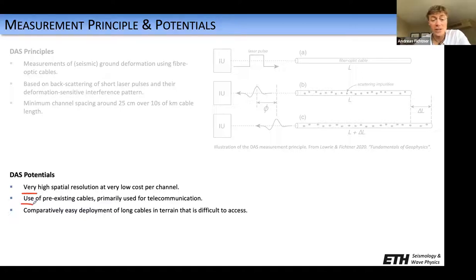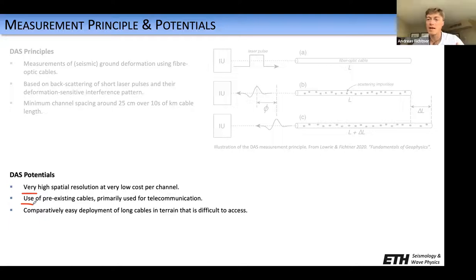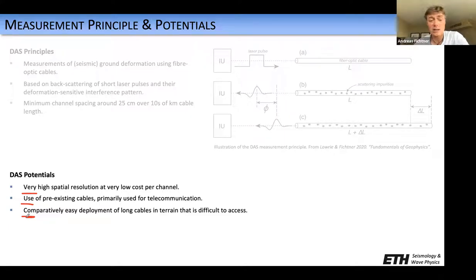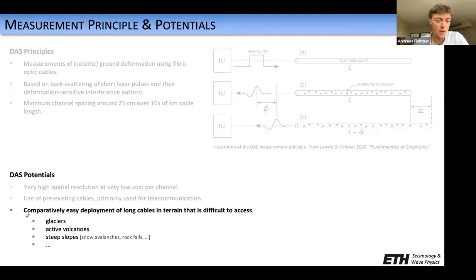One can also use pre-existing cables that have been installed for telecommunication. That is particularly attractive in urban environments where the deployment of dense seismometer networks might be challenging or impossible. And sometimes the deployment of long cables is actually quite easy, even in terrain that by itself might be difficult to access. This includes, for example, glaciers, active volcanoes, unstable slopes, and so on.